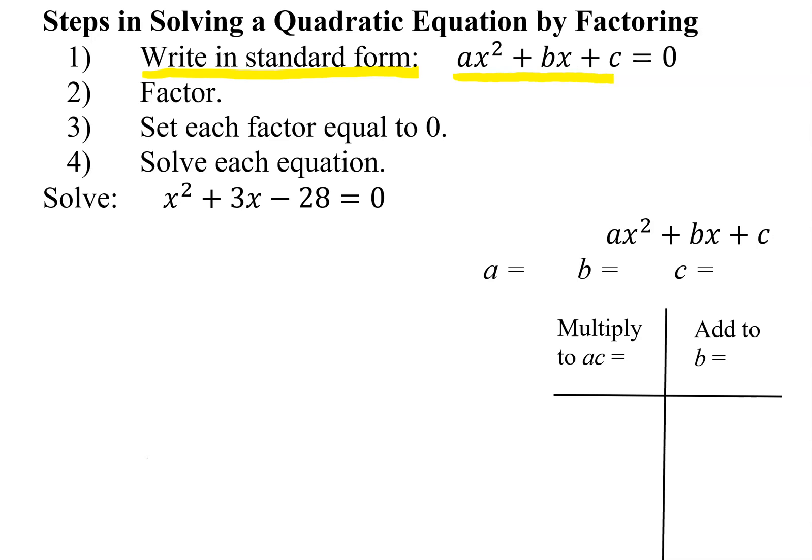That means everything written on one side in descending order, 0 on the other. Is that already done for me in this case? Yes, so step 1 is already completed.